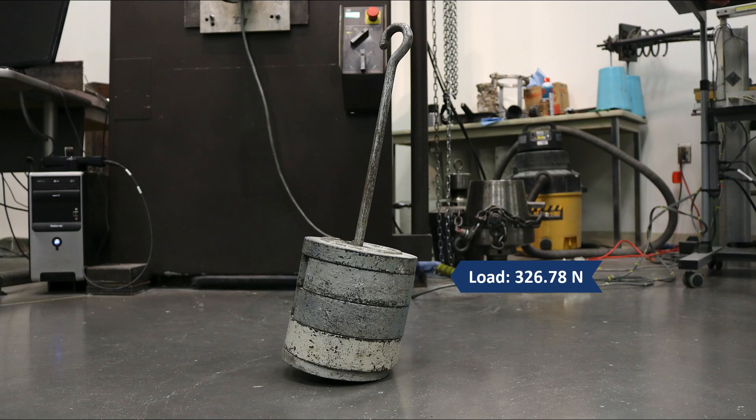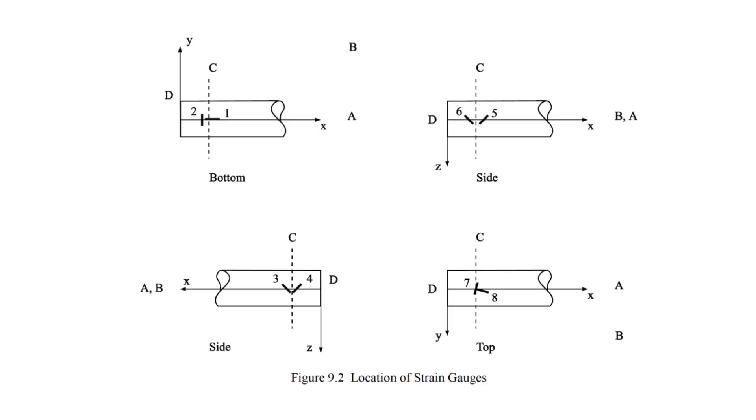For the next step, identify and record the load that will be applied to the specimen. Now, connect the strain gauges to the strain indicator. There are eight strain gauges at location C, arranged as shown in figure 9.2 in your manual.